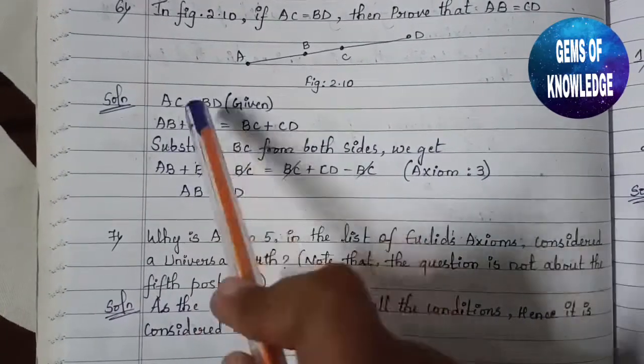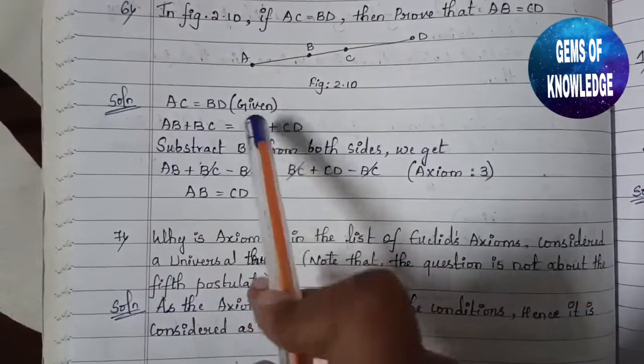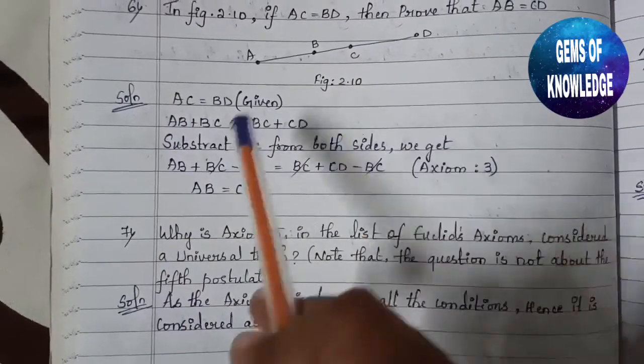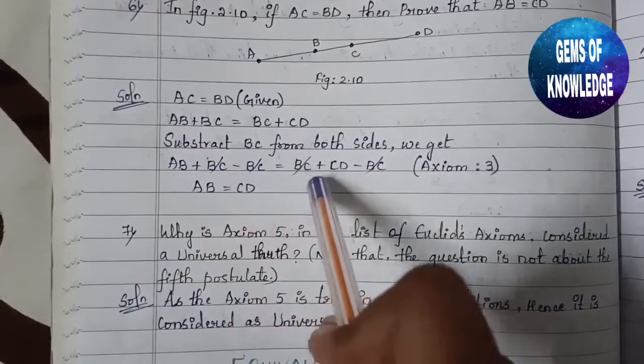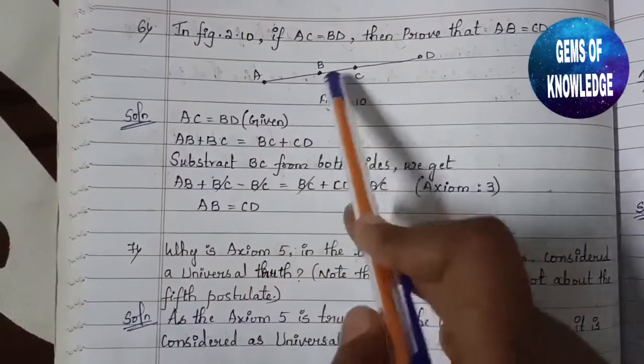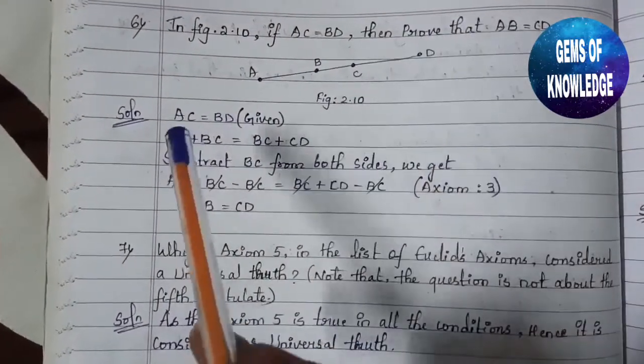Subtract BC - you can see BC is on both sides. After subtracting BC from both sides, we get AB equals CD. That's what we needed to prove. This completes the sixth question.